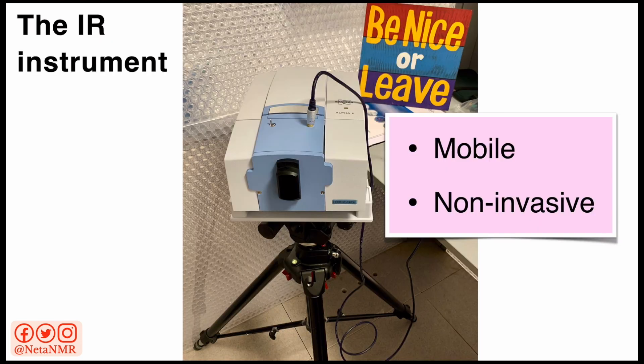There are different types of infrared instruments. Here is one example of an infrared spectrometer which is portable. As you can see from this image, the instrument is pretty small and we can place it on a tripod — it doesn't even need a designated area in a lab. So we can even take it with us to remote archaeological sites for experiments.